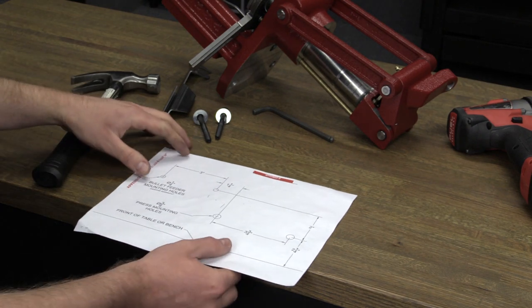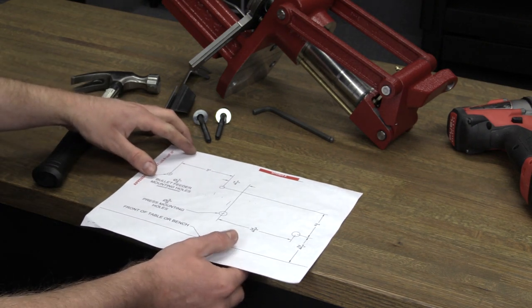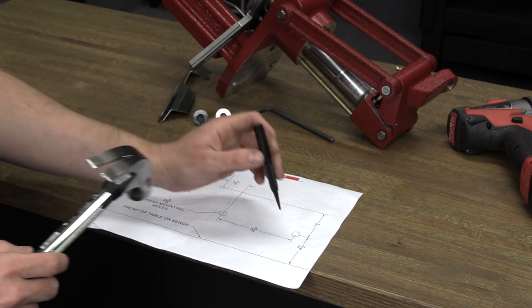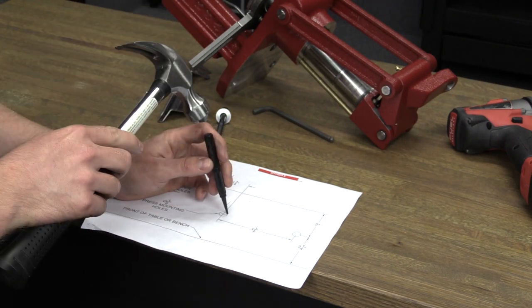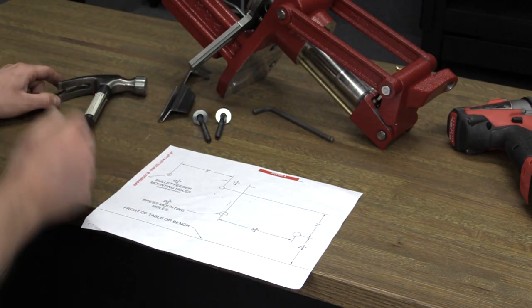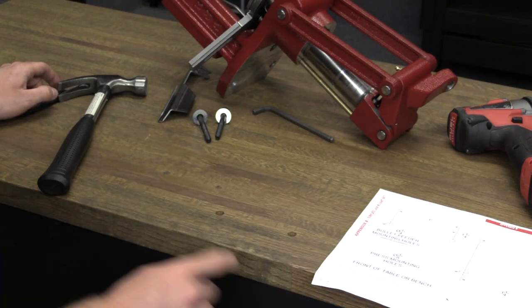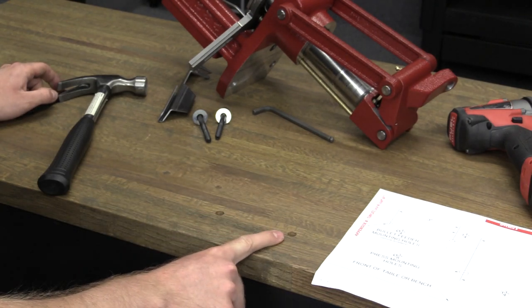Now, securely mount your Hornady Lock and Load AP on a solid level bench using the template found on the last page of the owner's manual. Use a hole punch to help locate each hole. The holes should be two and a quarter inches from the edge of the bench and three and three quarter inches apart.